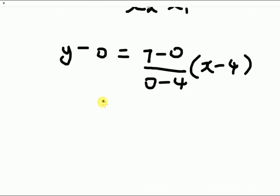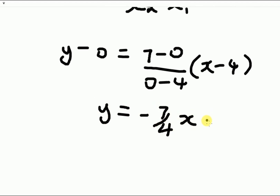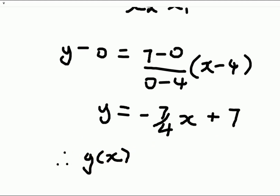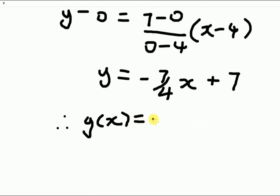Solving gives us Y equals negative 7 over 4 times X plus 7. Therefore G of X, which is the equation we were looking for, is equal to negative 7 over 4 times X plus 7.